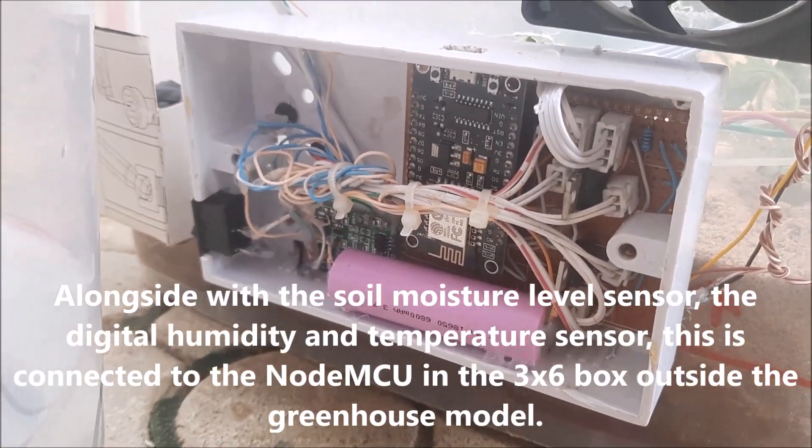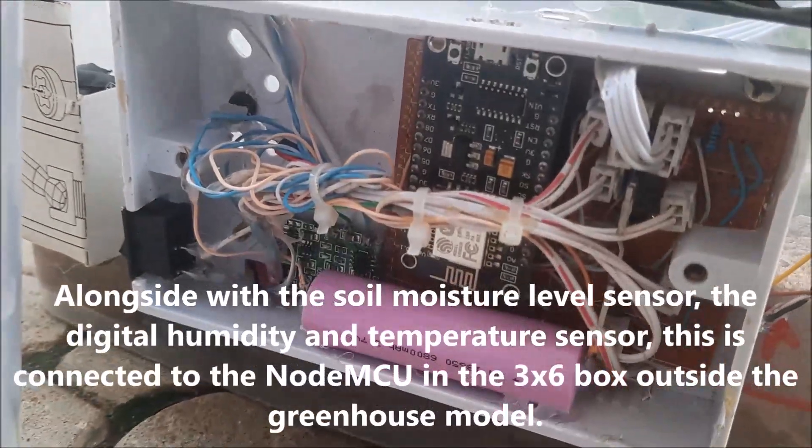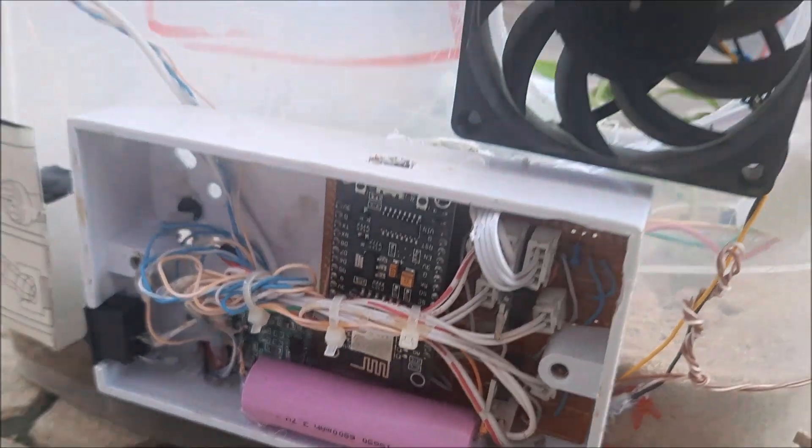Along with the soil moisture level sensor and the digital humidity and temperature sensor, this is connected to the NodeMCU in the 3x6 box outside the greenhouse model.